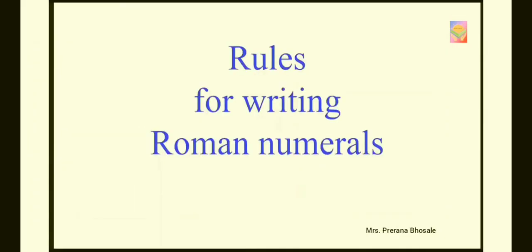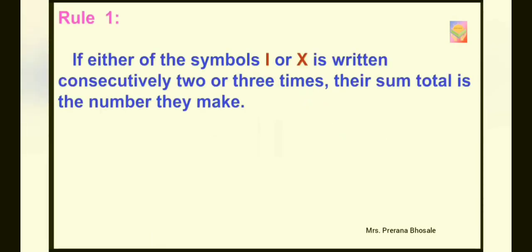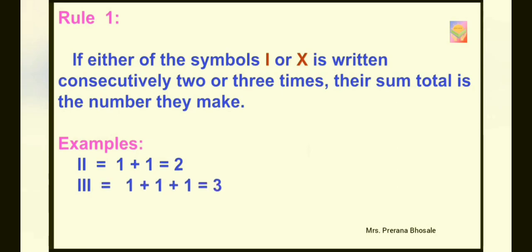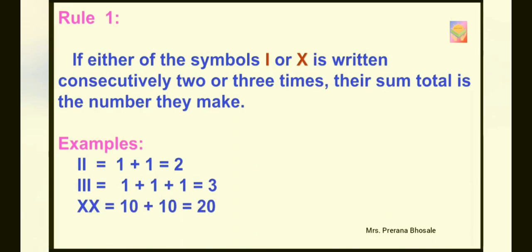There are certain rules for writing numbers using Roman numerals. Let's see how to write numbers using these rules. According to the first rule, if either of the symbols I or X is written consecutively 2 or 3 times, their sum total is the number they make. For example, writing I twice gives 1 plus 1 equals 2. Writing I three times gives 1 plus 1 plus 1 equals 3. Writing X twice gives 10 plus 10 equals 20.